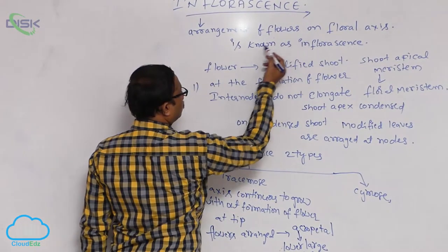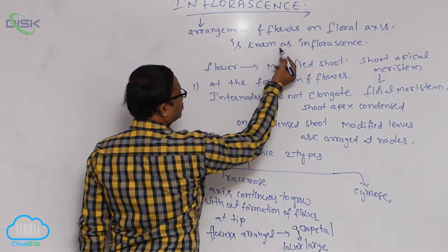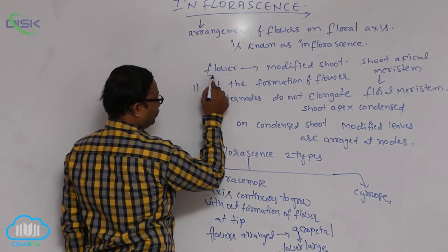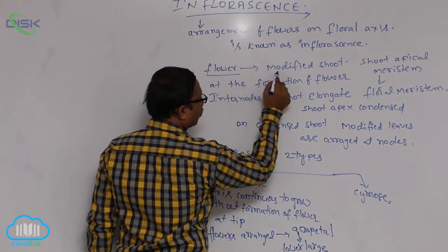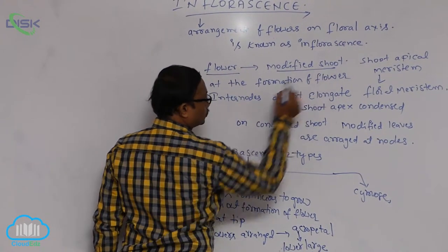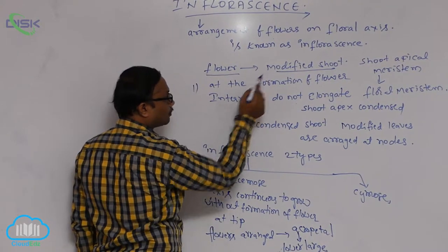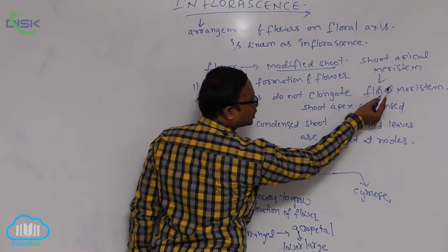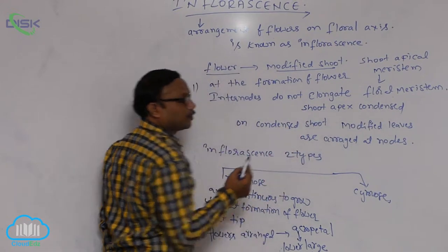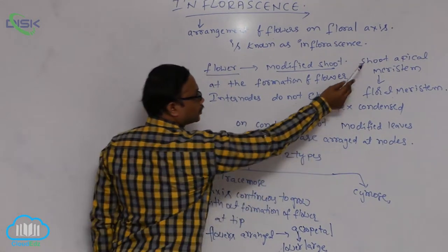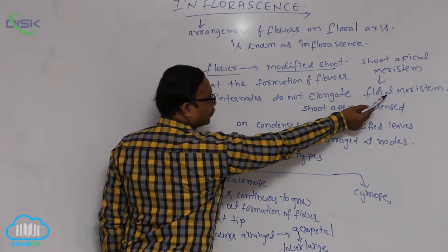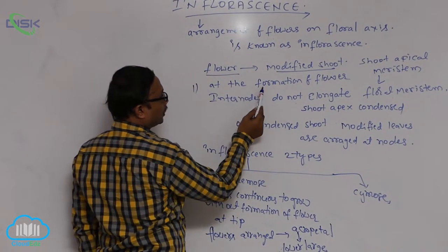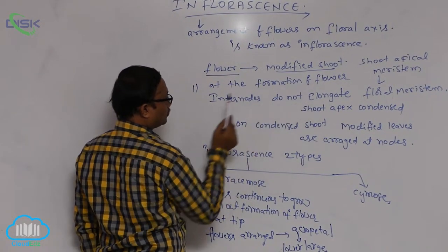The arrangement of flowers on a floral axis is known as inflorescence. A flower is a modified shoot. Before the formation of a flower, the shoot apical meristem converts into the floral meristem.